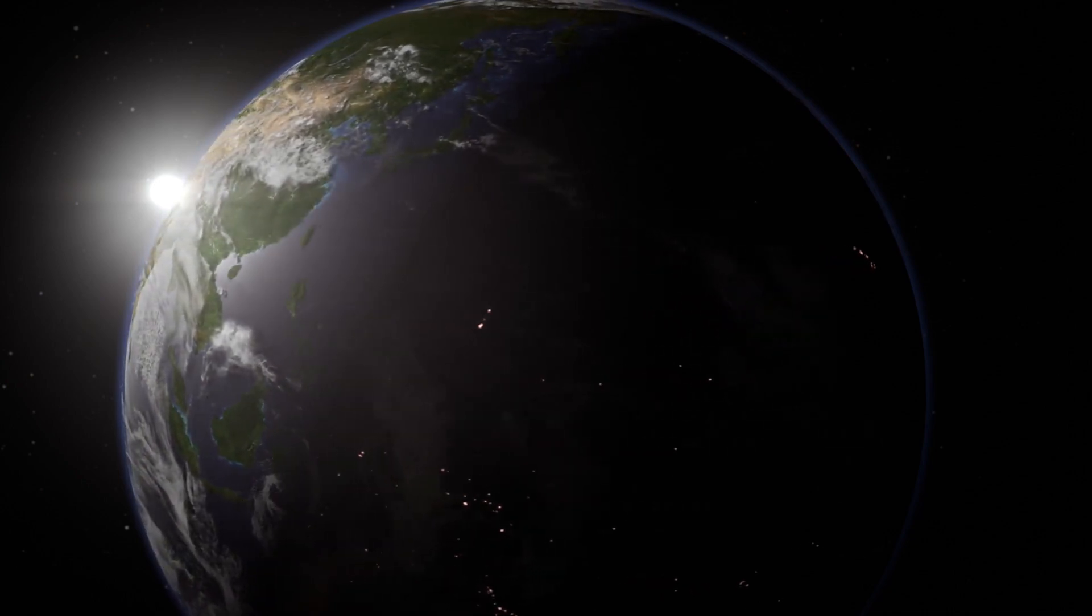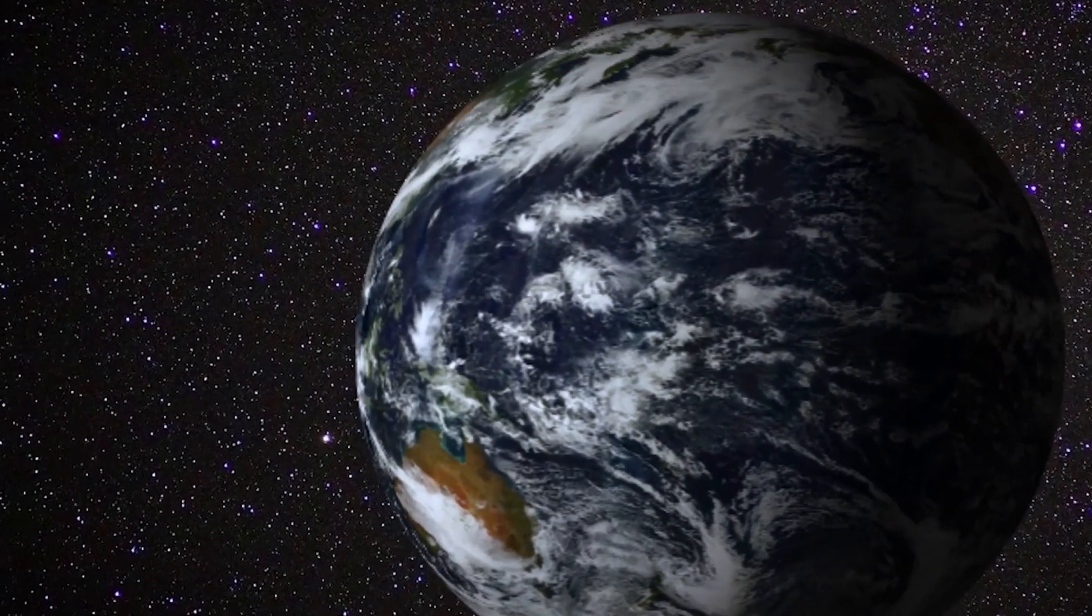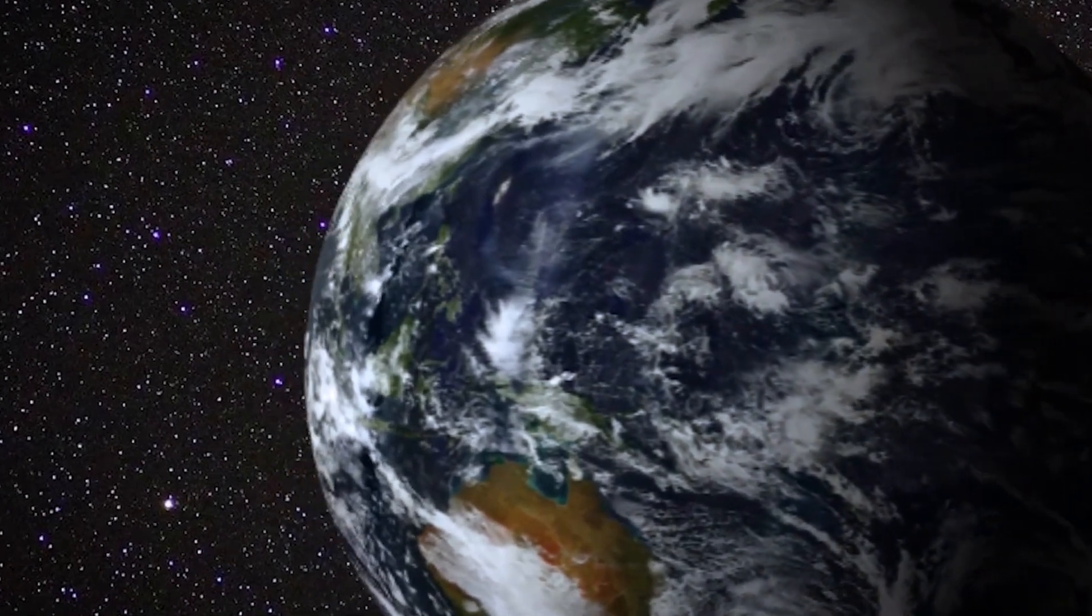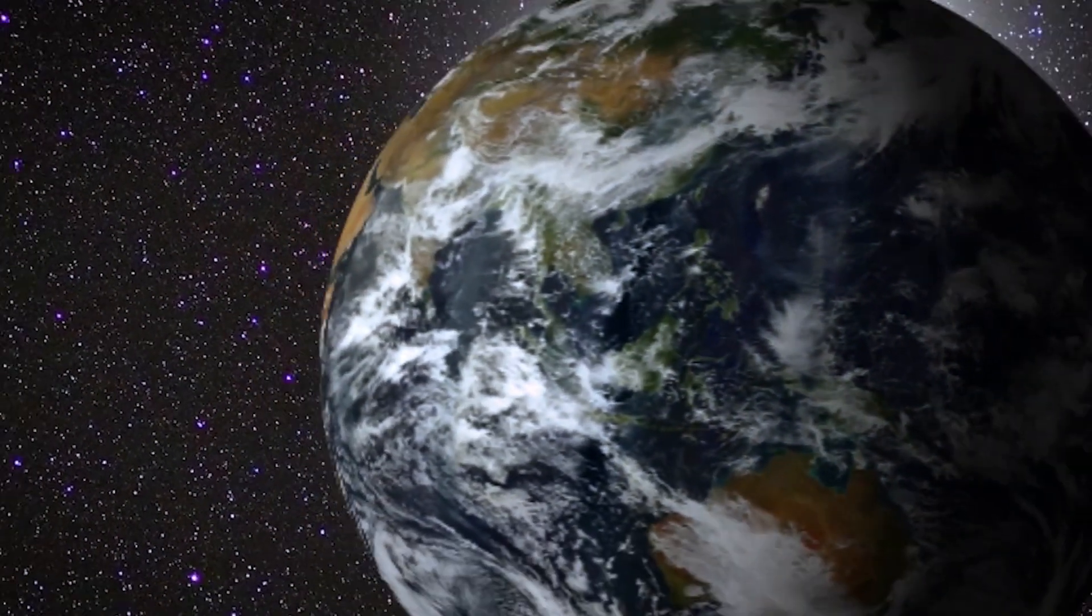While most versions of the expanding Earth hypothesis focus on the expansion itself, J. Marvin Herndon proposed a more radical idea: that the Earth was once a giant gas giant, like Jupiter, and that its expansion is a consequence of losing its massive atmosphere. This hypothesis, while unconventional, offers a unique perspective on the Earth's formation and evolution.